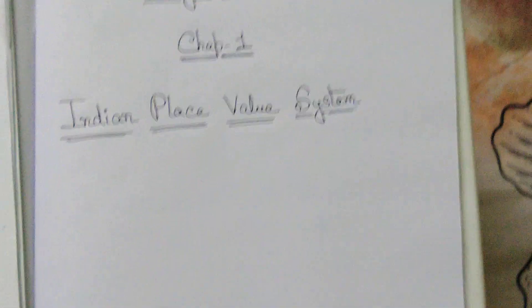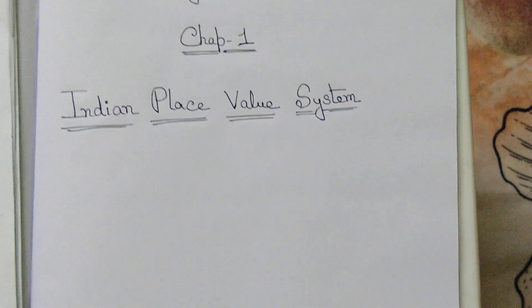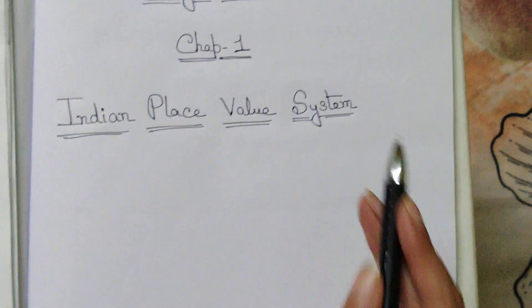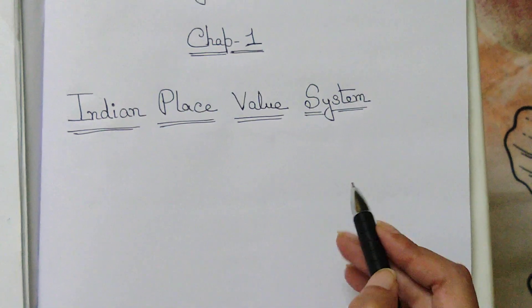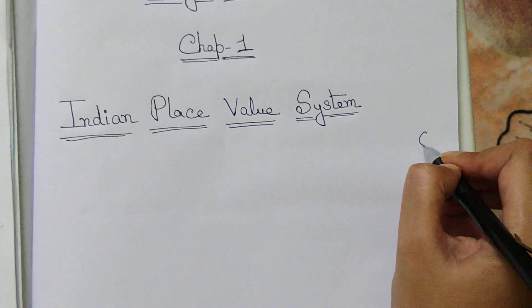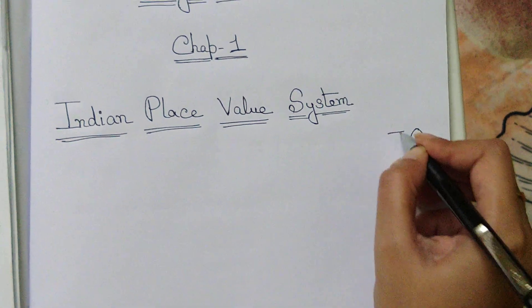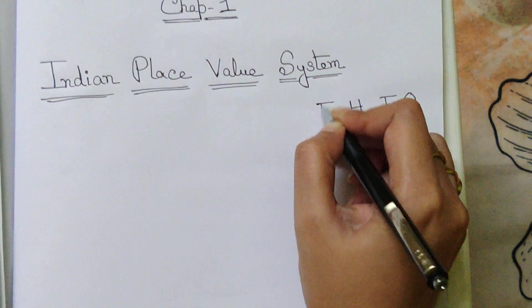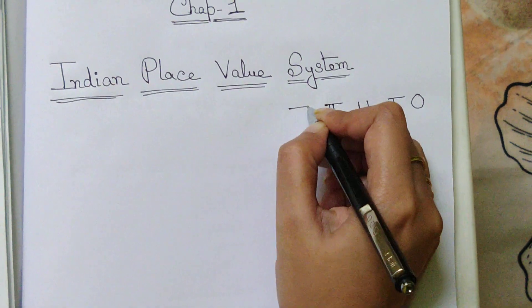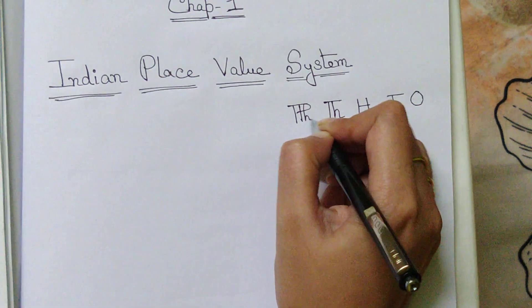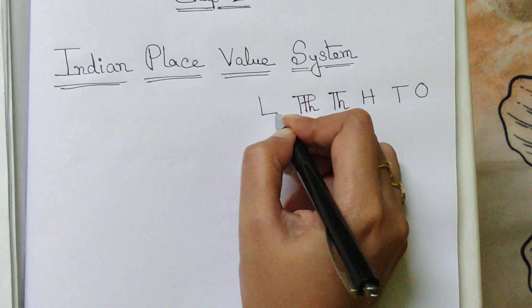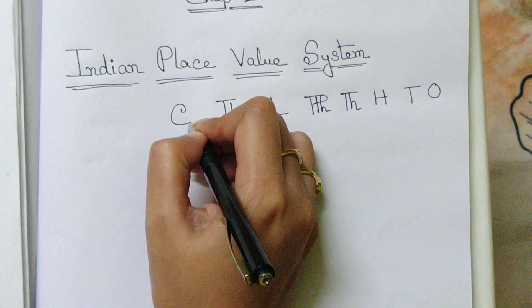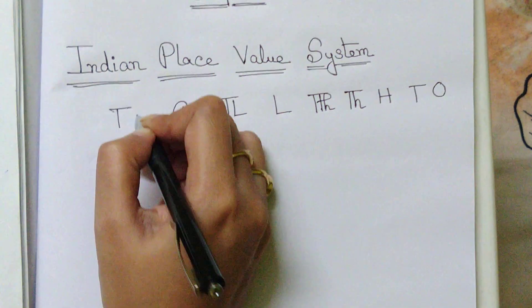Let's have a quick recap of the place value system. Let's start with the Indian place value system. The Indian place value system starts with ones, tens, hundred, thousand, ten thousand, lakh, ten lakh, crore, ten crore.